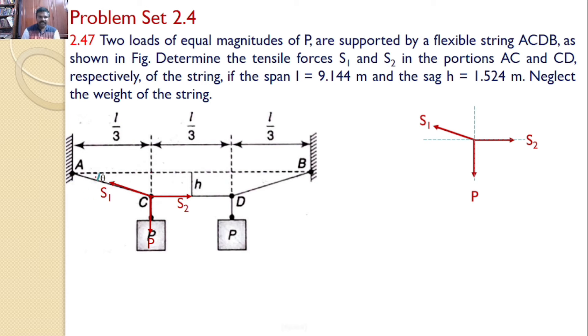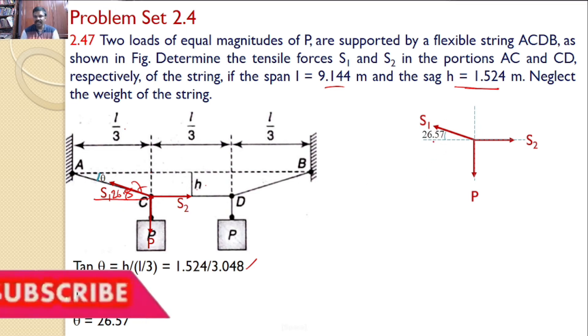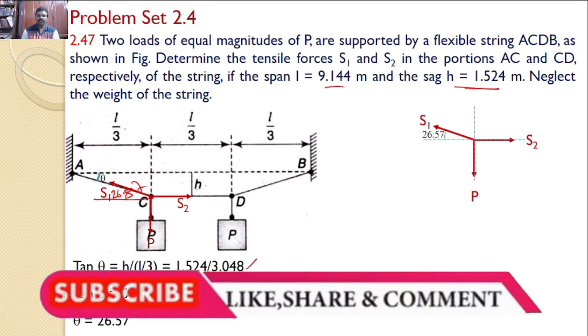Let us take this angle as theta. Since I know the value of h and L/3, I can find this theta. Tan theta equals h divided by L/3. Given that h equals 1.524 and L/3 equals 3.048, tan theta equals 0.5, or theta equals 26.57 degrees. That means S1 makes an angle of 26.57 degrees with the horizontal.